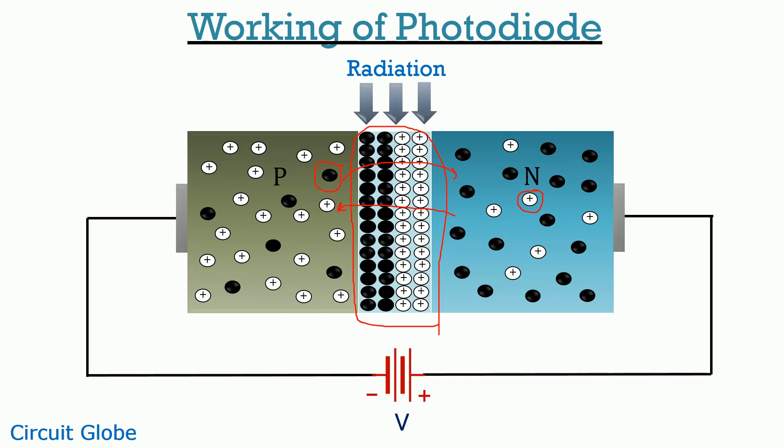Now, at this particular time, we provide radiation to the junction or we can say the junction is illuminated with light. As the radiation falls on the surface of the junction, the temperature of the junction increases.